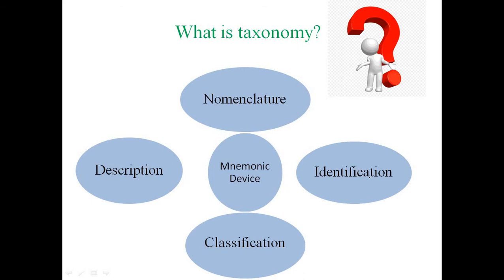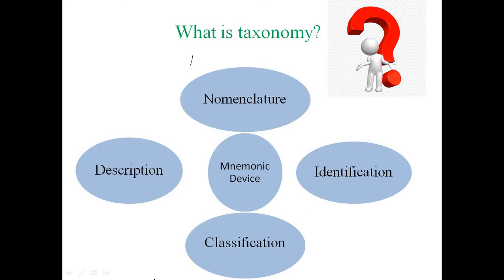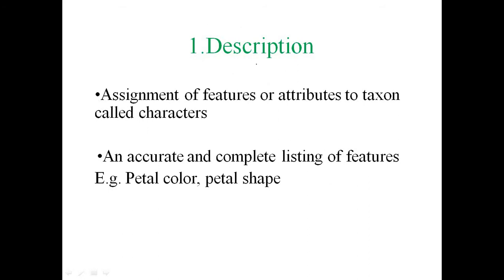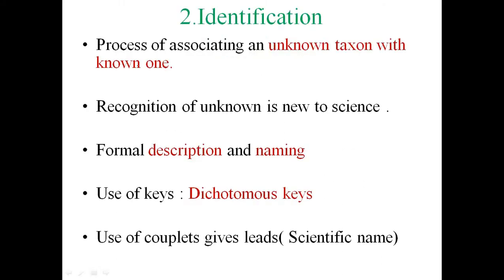This chart or tree diagram shows that taxonomy is a union of the mnemonic device D-I-N-C: description, identification, nomenclature, and classification. In the description step, when we receive any plant material or plant part, we assign features or characters to that plant. This enlisting of characters includes vegetative and reproductive characters — for example, petal color, petal shape, habit, and height — which are used for the description of that plant.